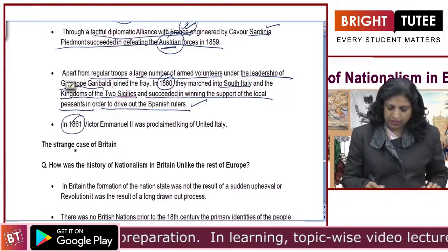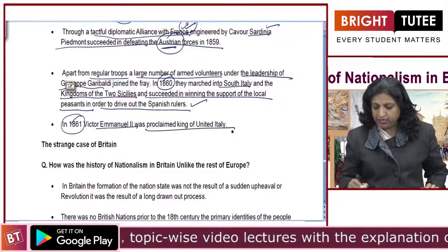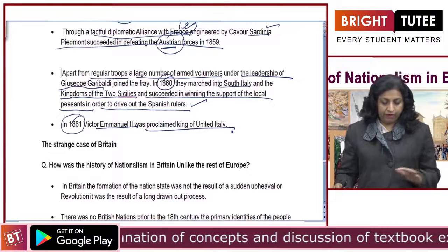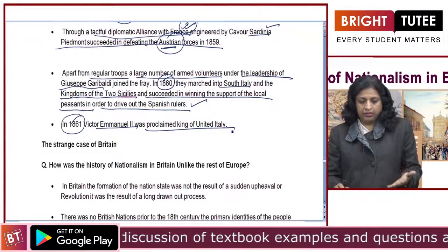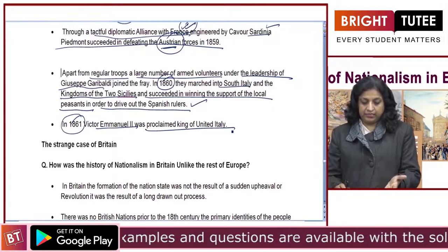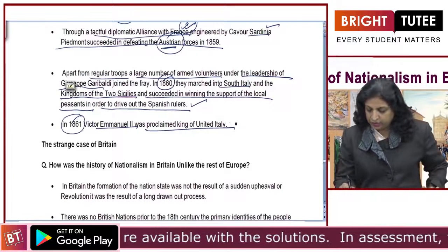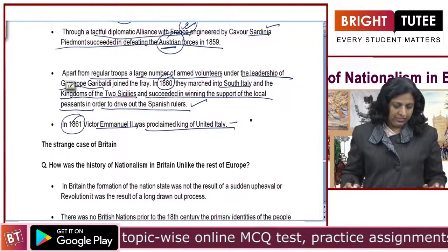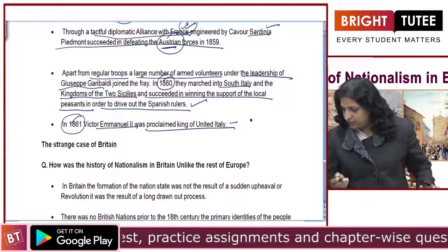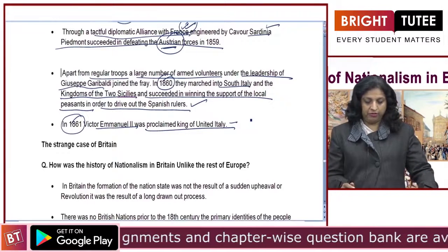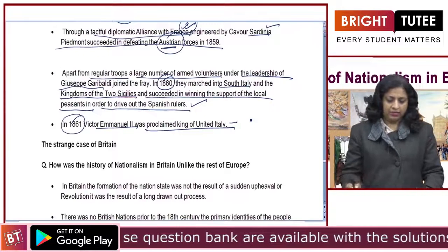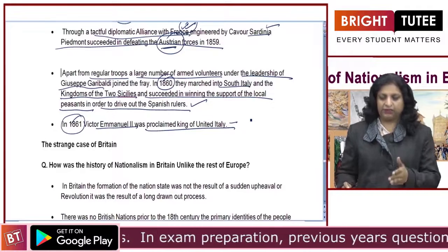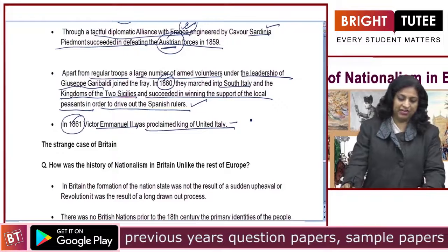Finally, in 1861, Victor Emmanuel II was proclaimed the king of united Italy. People were not fully aware — they used to speak of 'Italia' but had never heard that name before. They used to believe that 'Italia' was the wife of Victor Emmanuel. That is how illiterate and backward people were in this region. But still, because of the efforts of Cavour, Giuseppe Garibaldi, and Victor Emmanuel II, the country was finally unified.